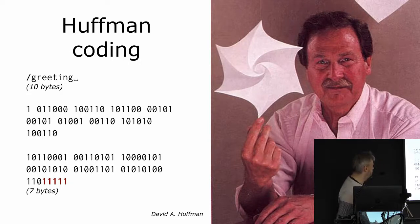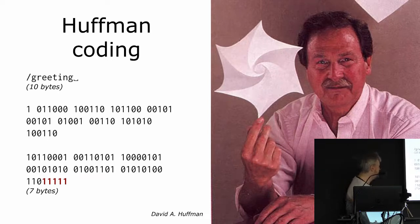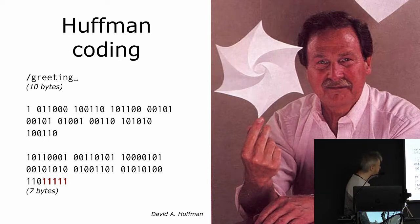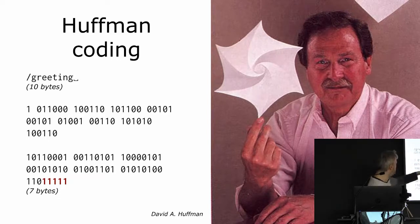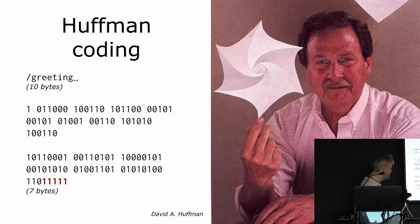Huffman coding exploits the fact that when sending text strings, certain characters are more common than others. It assigns each character a bit pattern — smaller bit patterns for the most common characters or bytes, and larger bit patterns for the less common ones. So a greeting string gets encoded with a 1-bit prefix saying 'yes, we're using Huffman coding,' and then each character maps to its bit pattern. When you rearrange that back into bytes and pad to fill a full byte, in this particular case you save three bytes by doing so — and with longer strings, you save even more.